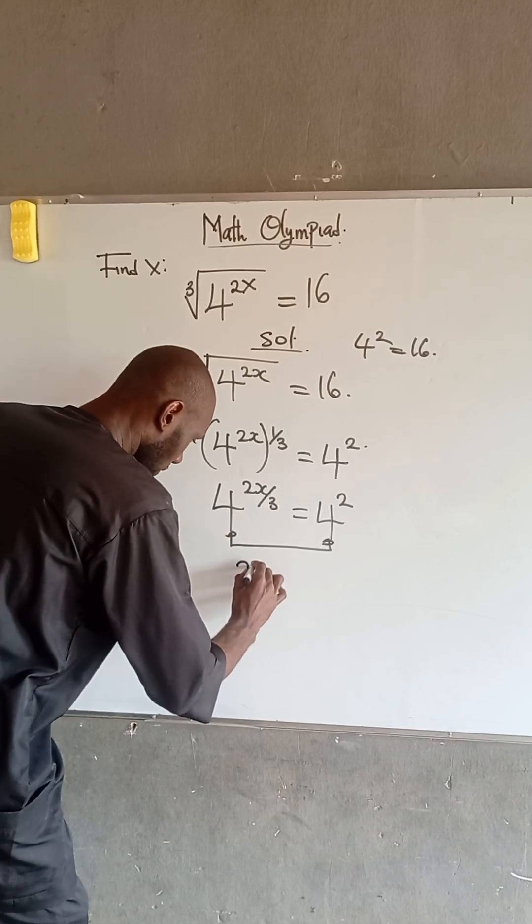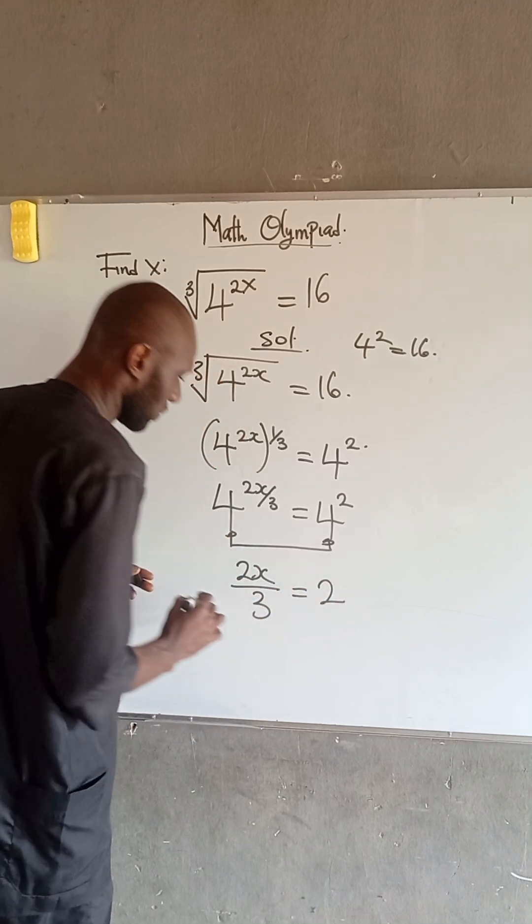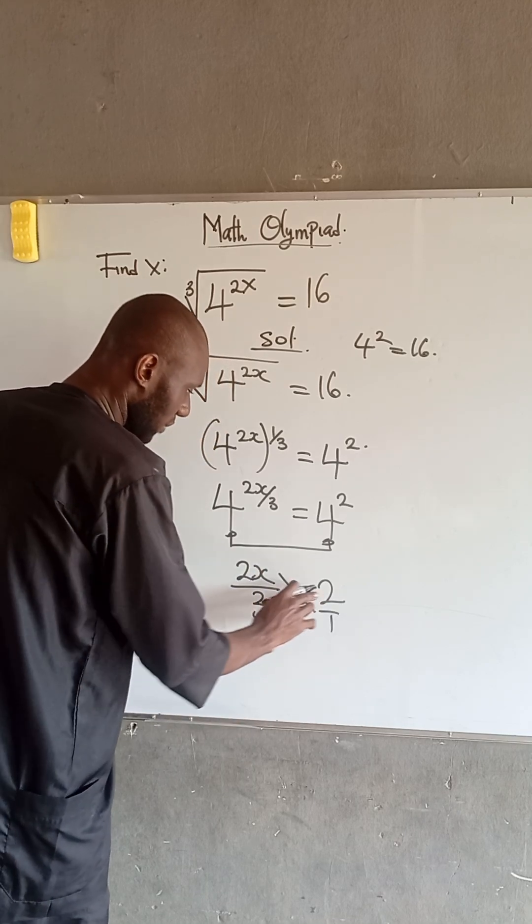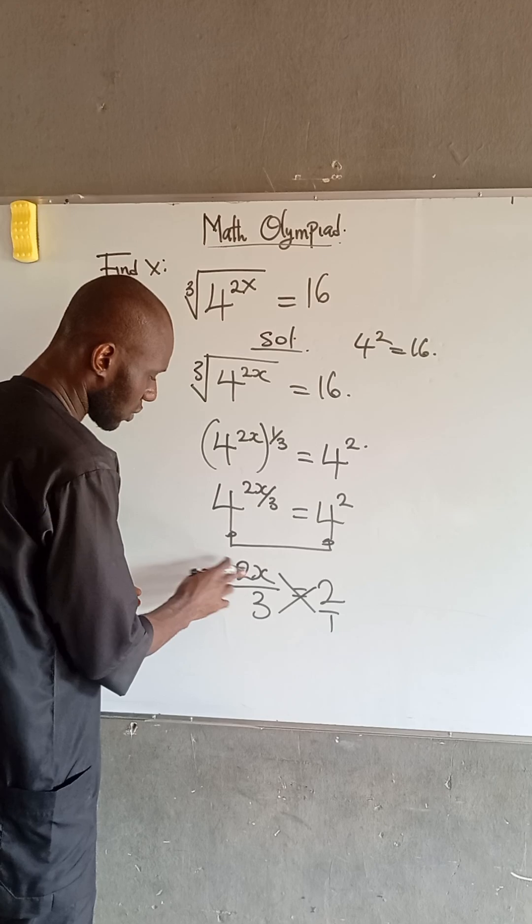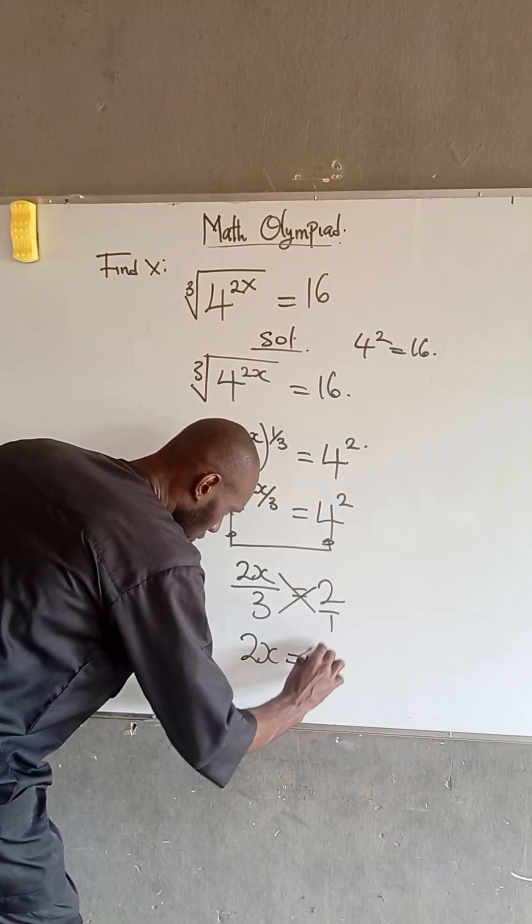So we have that 2x divided by 3 is equal to 2. At this point, we can cross-multiply. We have that 3 times 2 is equal to 6, and 2x times 1 is 2x. So we have 2x is equal to 6.